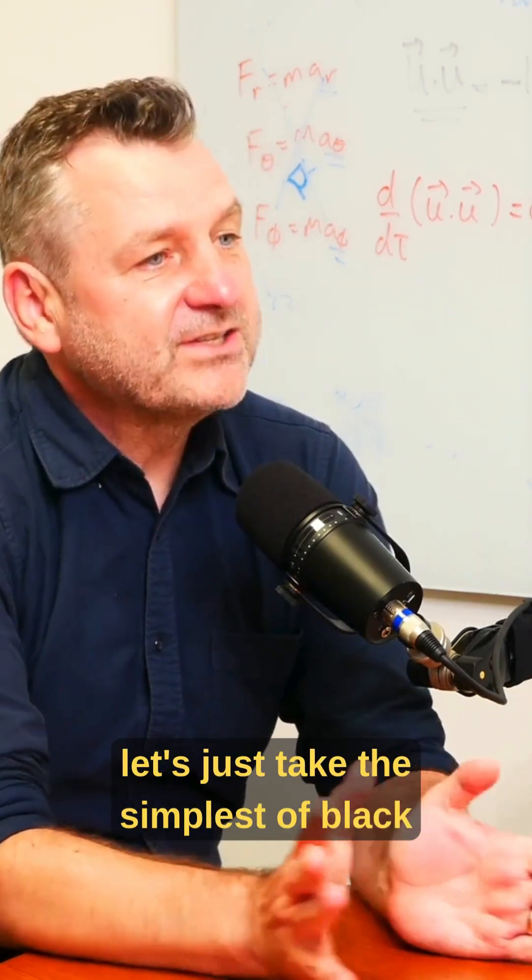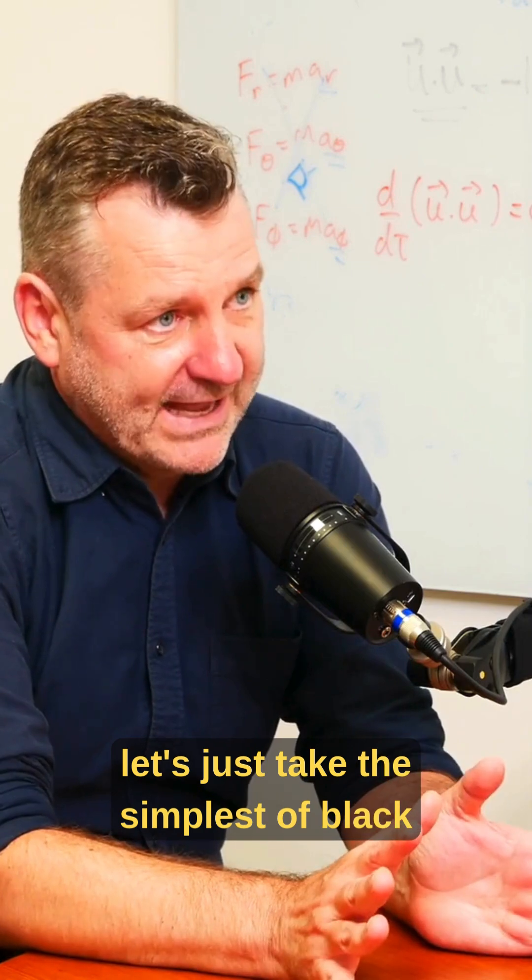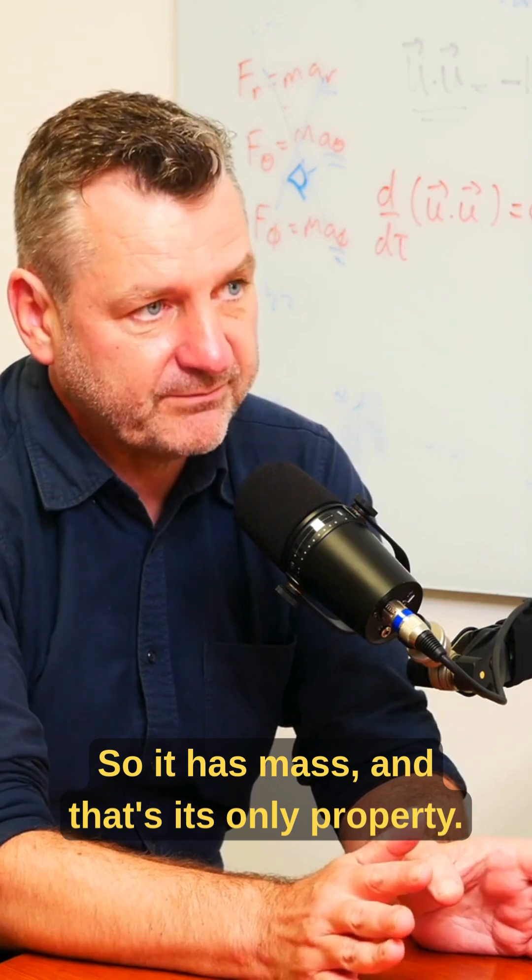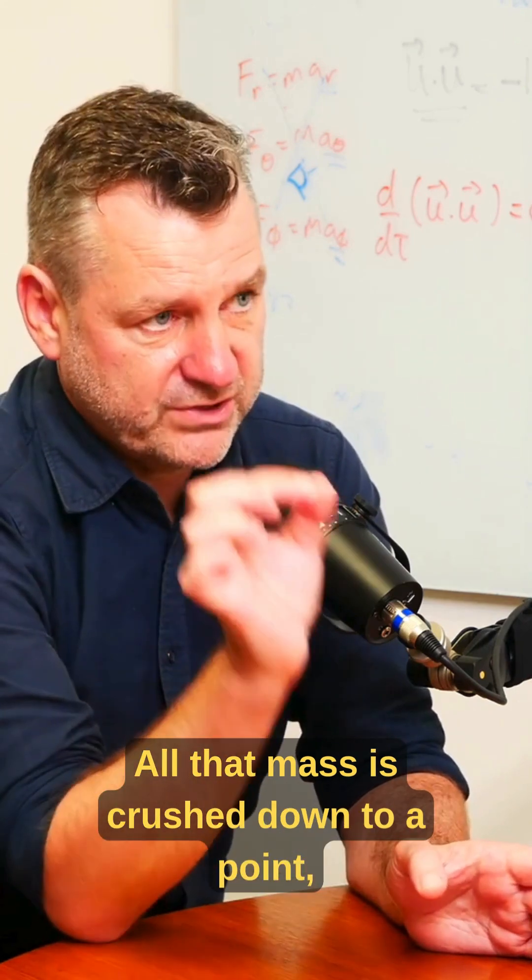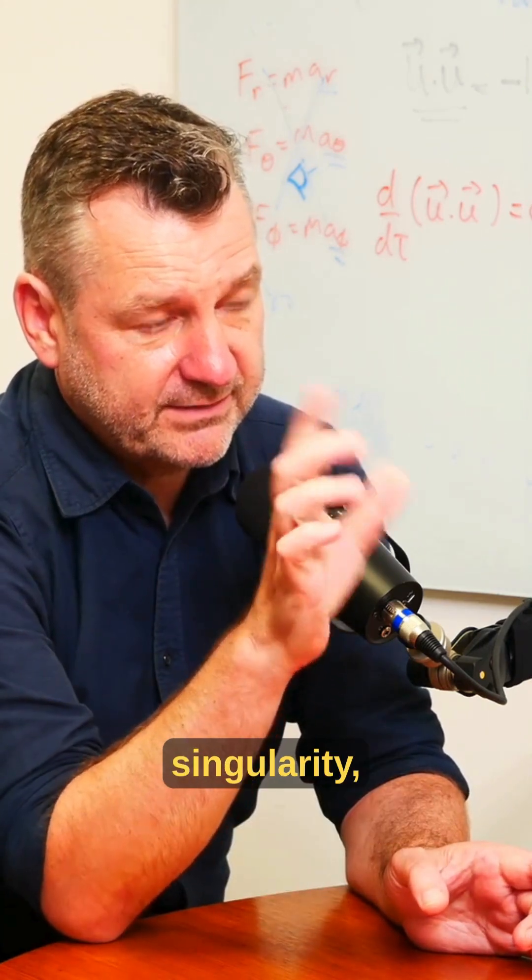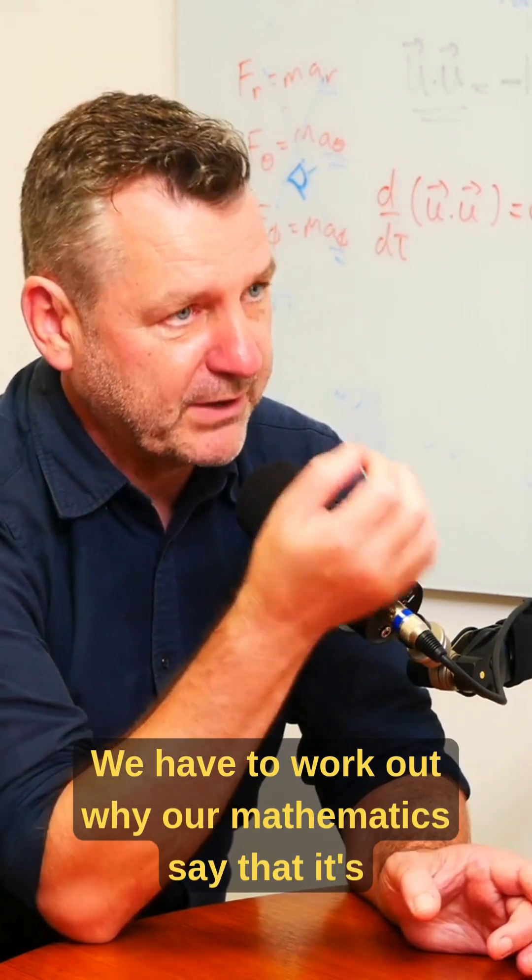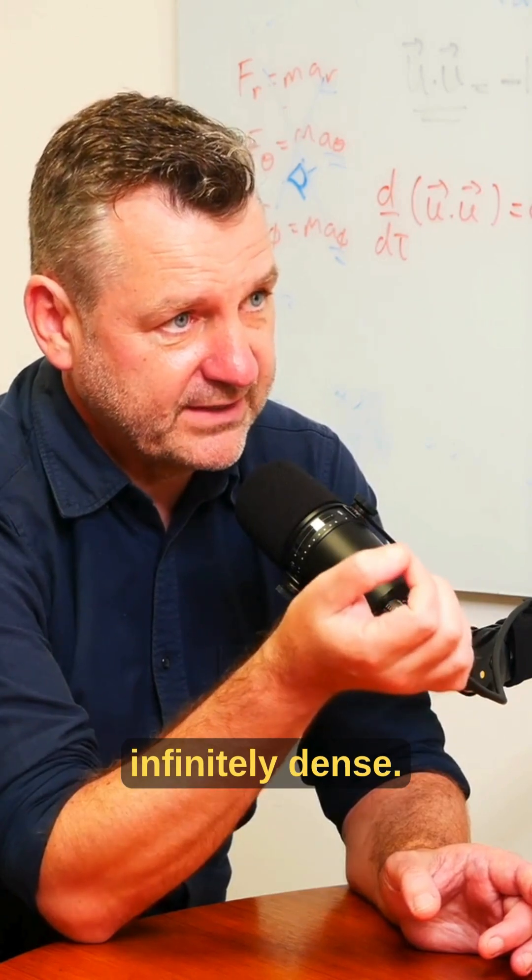So let's just take the simplest of black holes, which is the Schwarzschild black hole. It has mass, and that's its only property. All that mass is crushed down to a point, a singularity, which probably is not really a point. We have to work out why our mathematics say that it's infinitely dense.